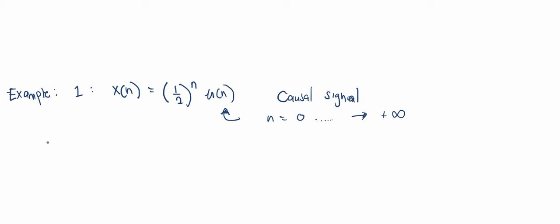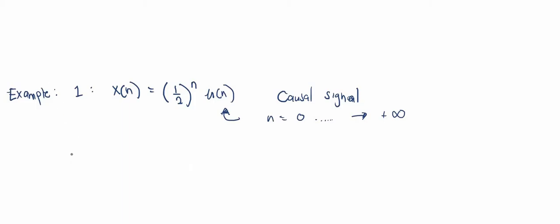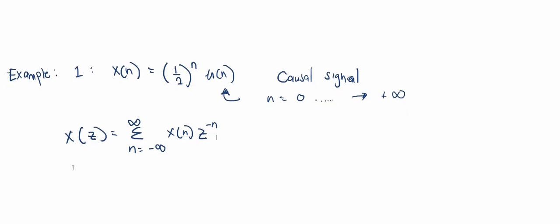Let's recall the formula for the Z-transform. If you were watching my previous video, you will have come across this formula. The Z-transform X(z) is the summation from negative infinity to infinity of x(n) multiplied by z raised to negative n.